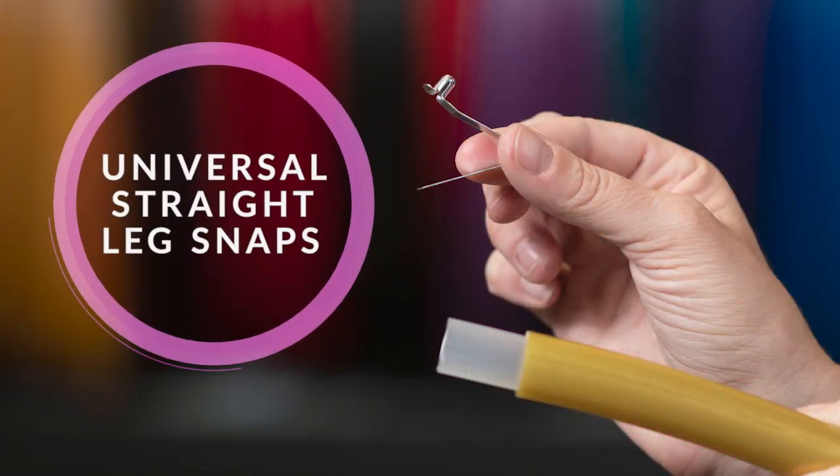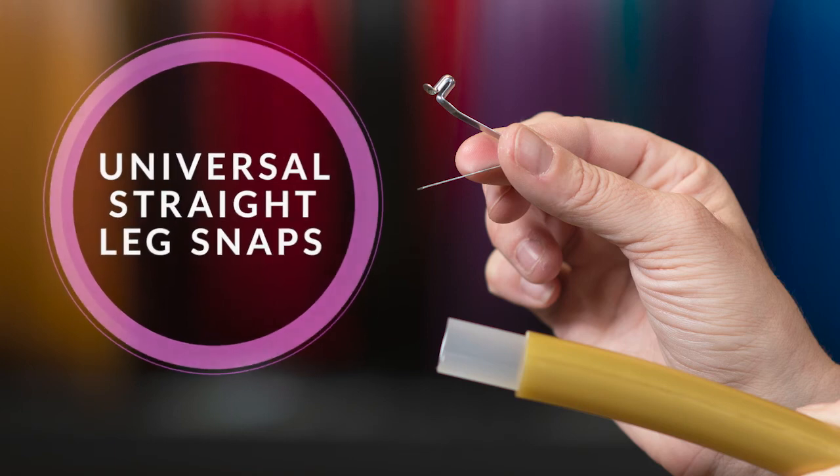Universal straight leg snaps are used for 5/8 inch, 11/16 inch, and 3/4 inch hoops using 1/2 inch and 5/8 inch insert materials.